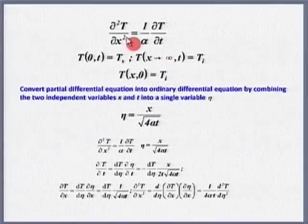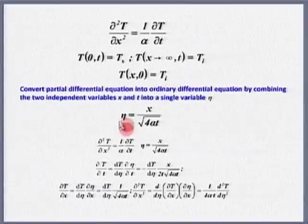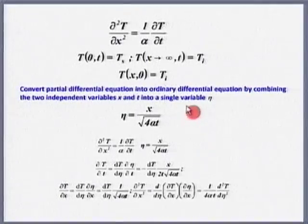We need to convert this partial differential equation into an ordinary differential equation. How do we do that? I am going to do that with a small trick — I will take η = x / √(4αt). How on earth does one know to define η that way? I am suspending that question for two minutes; I will answer it through scale analysis a little later. For now, take my word and take η = x / √(4αt), where α is thermal diffusivity, t is time, and x is the location.